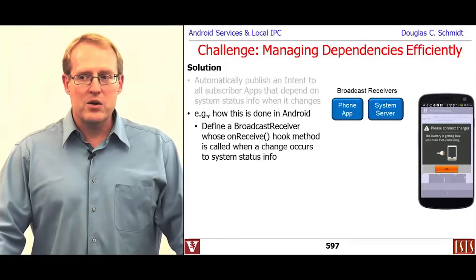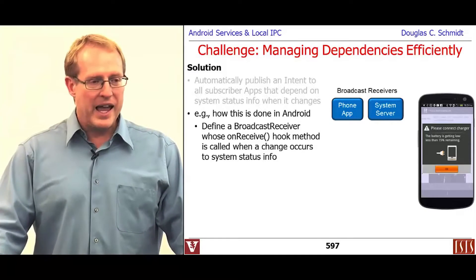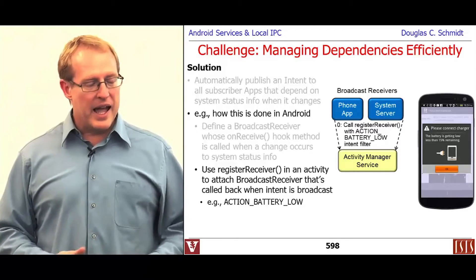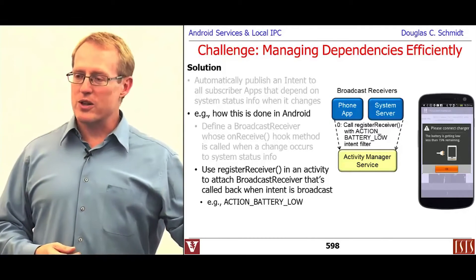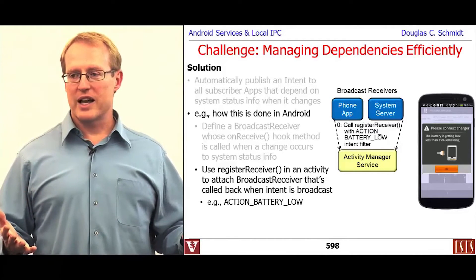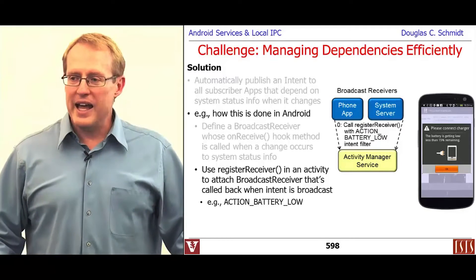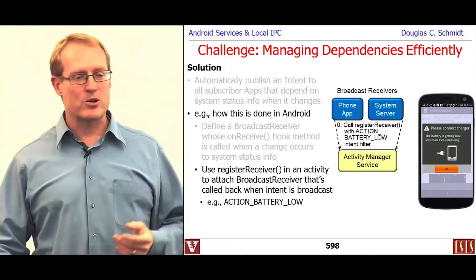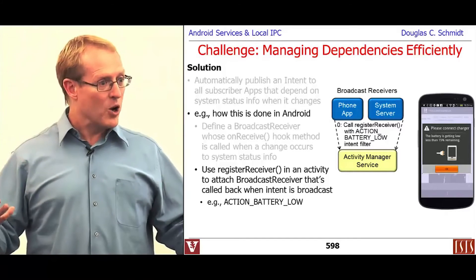Here's how this works in Android. We define things called broadcast receivers, which have "on receive" hook methods that get called back at the appropriate time. You can register these by using register receiver or by using the underlying Android manifest files. What that does is tell the activity manager service, "I care about these kinds of things — so if those kinds of things occur, let me know about it."